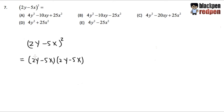What we do first is take 2y and multiply by 2y, and figure out the result. We work out the numbers first: 2 times 2 is 4, and y times y is y squared. So 2y times 2y gives us 4y squared.